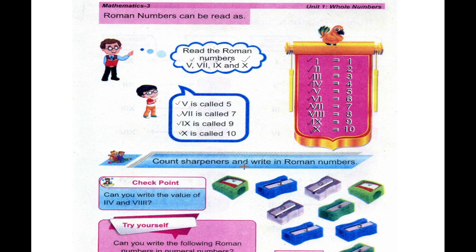Count the sharp runs and write in Roman numbers. Now we have to count all these sharp runs and write them in Roman numbers: 1, 2, 3, 4, 5, 6, 7, 8, 9. We have a total of 9. So 9 is denoted as IX — a straight line and X.